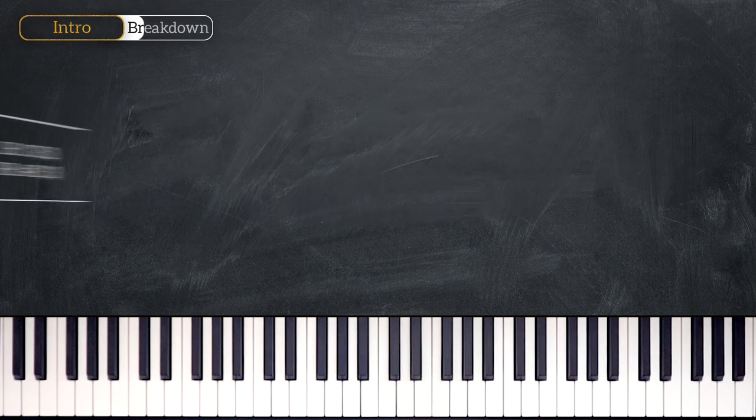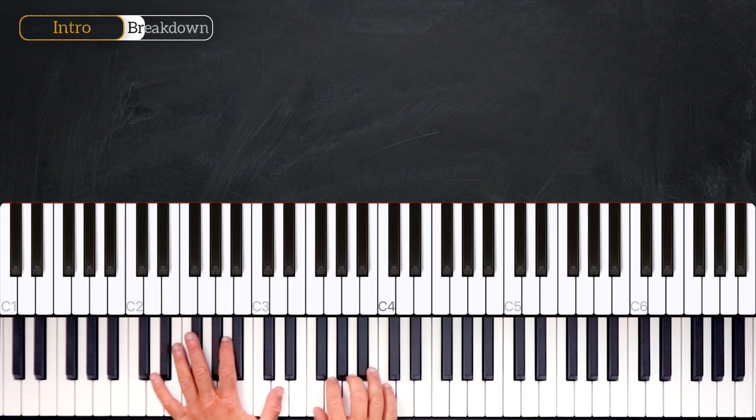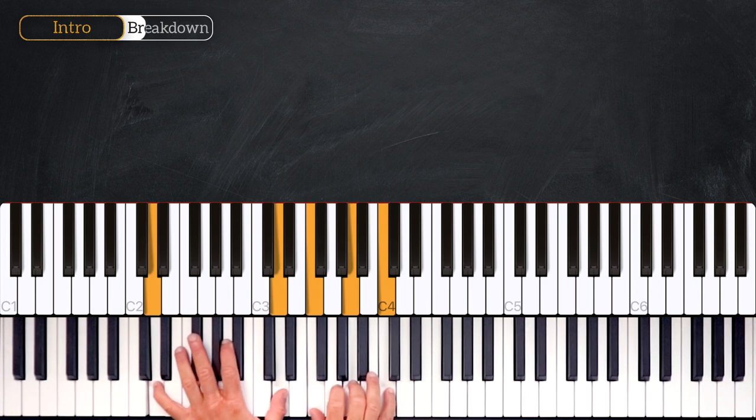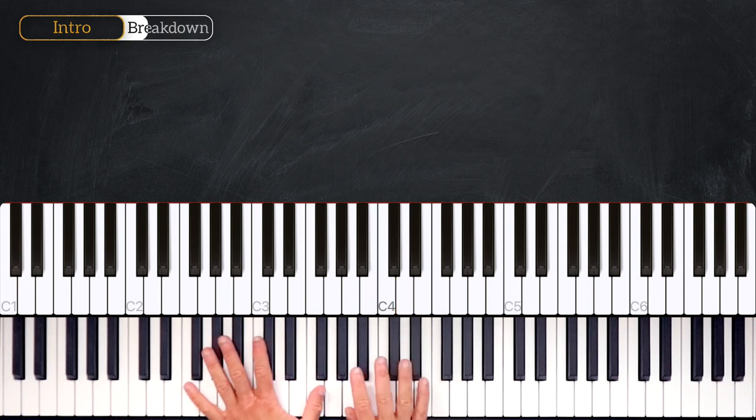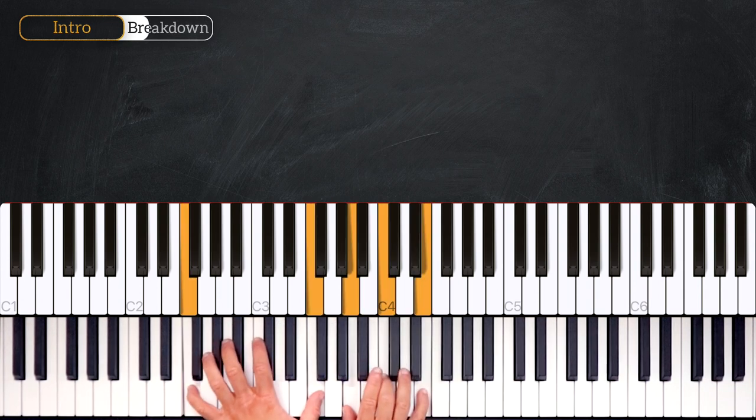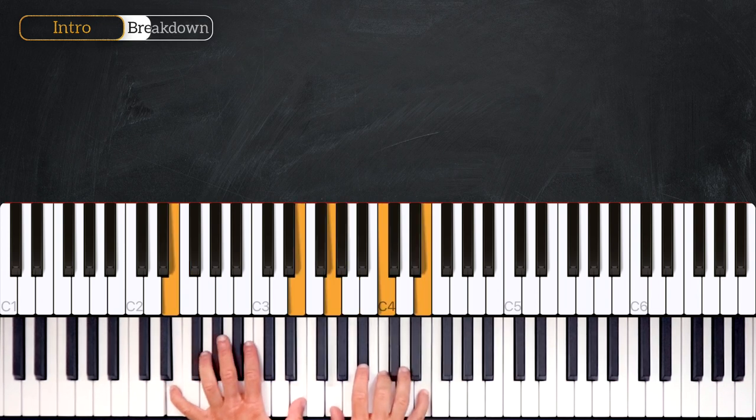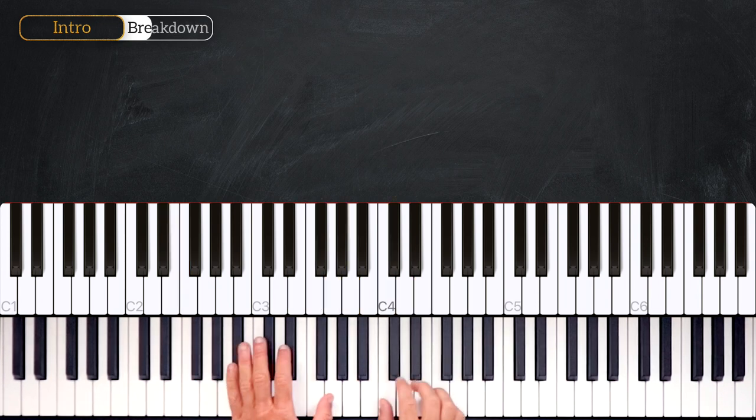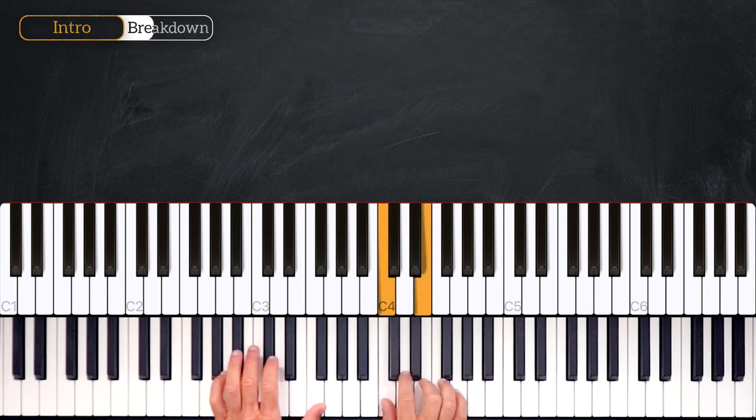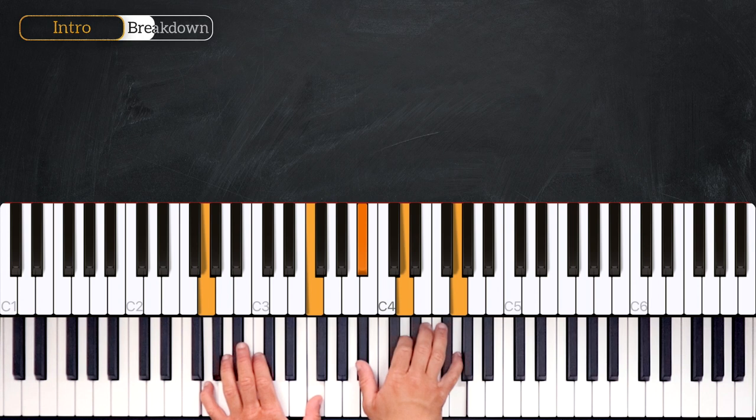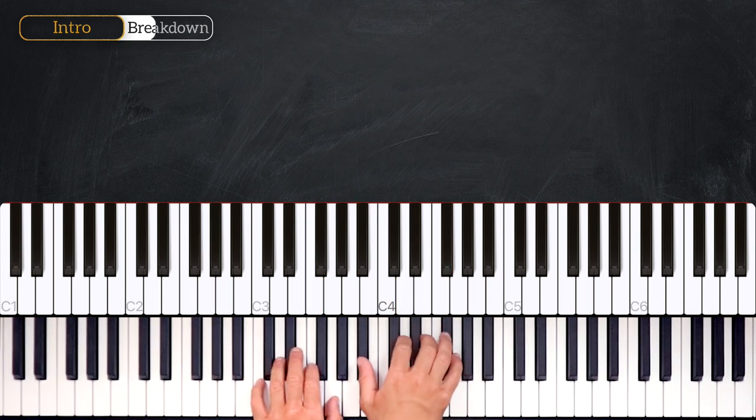Let's play them again. So we start on D minor 7, then we'll play G sharp diminished into F major 7, then C over E. Then we'll play A minor 7, G minor 7, C7, and that's all.